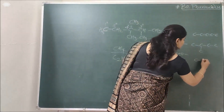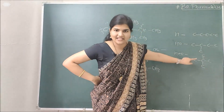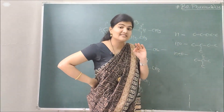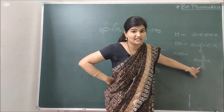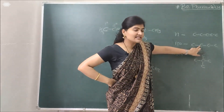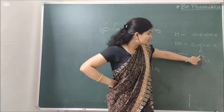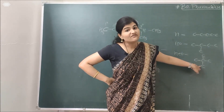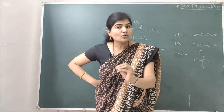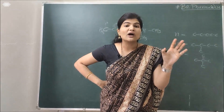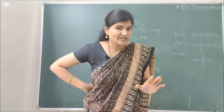And if the second-to-last carbon has two methyl groups and no other branching, it is called neo. So N, iso, and neo are the prefixes used to identify different isomers of alkanes in the common naming system.